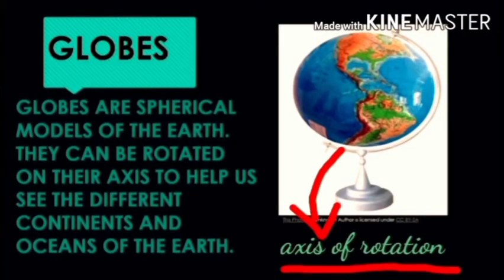The first topic is about globes. Globes are spherical models of the earth. They can be rotated on their own axis to help us see the different continents and oceans of the earth. In this picture we can see the globe and the axis of rotation.